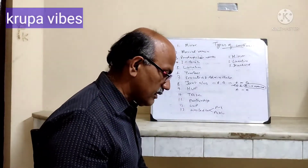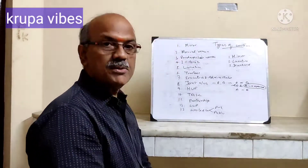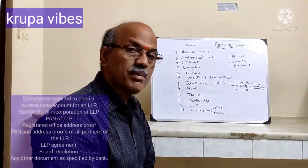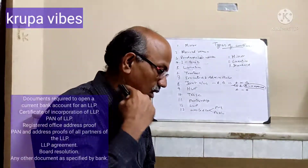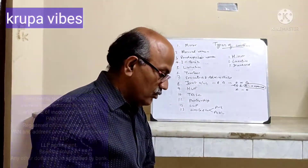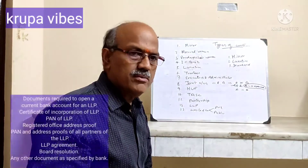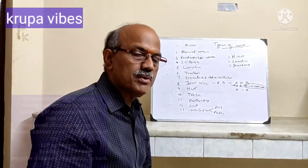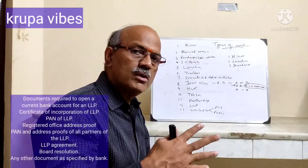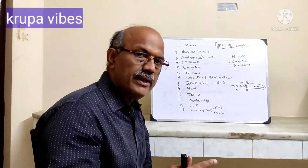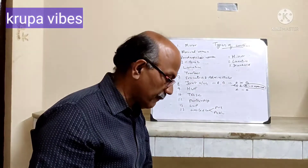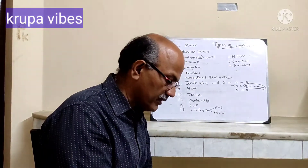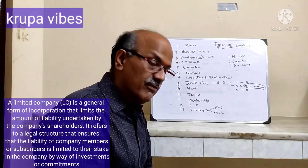Under partnership, this is governed by the Indian Partnership Act 1932, which defines partnership as a relationship between persons who have agreed to share the profits of a business — carried on by all or any of them acting for all. Can a minor be a partner? Yes, a minor can be a partner, but he cannot be held liable for any loss or debts in the partnership account. On the death of one partner, the partnership deed has to be redone, the account has to be closed and a new account opened.